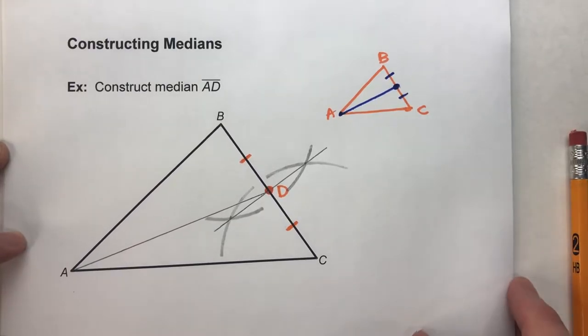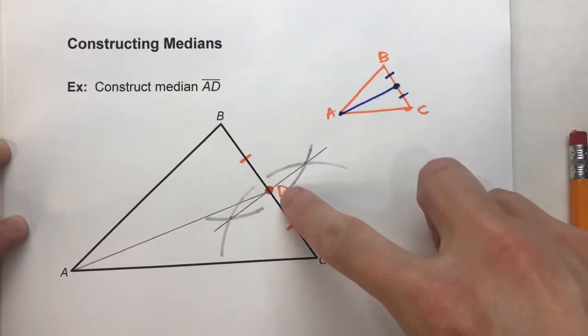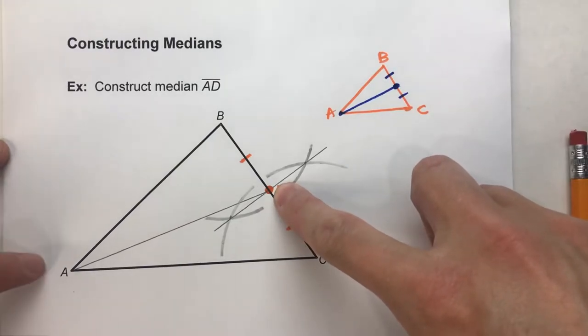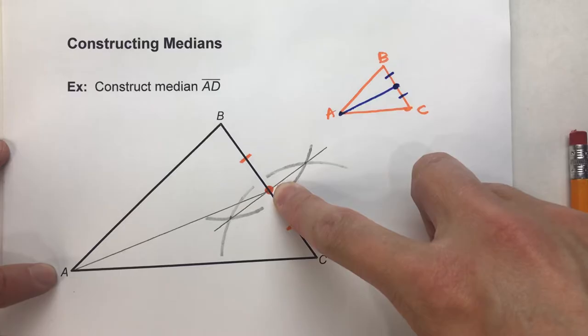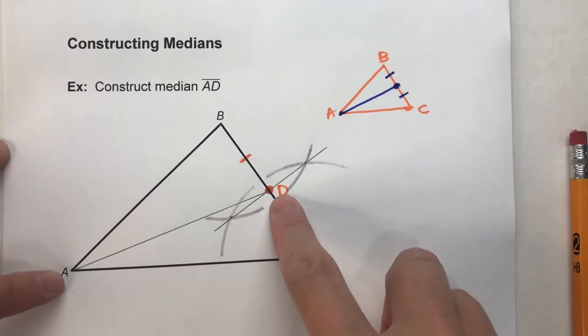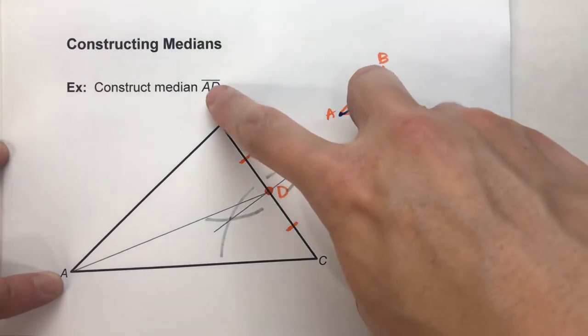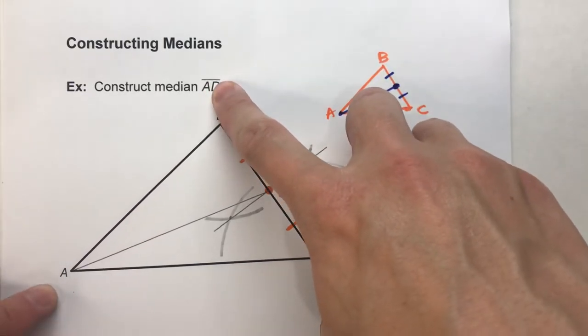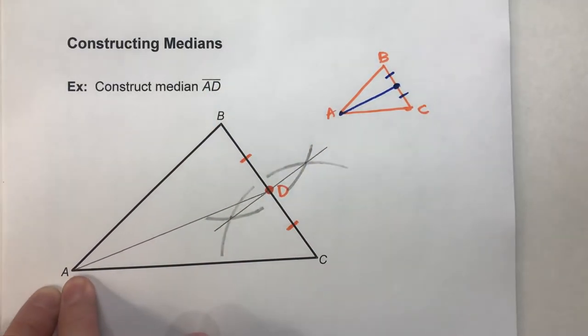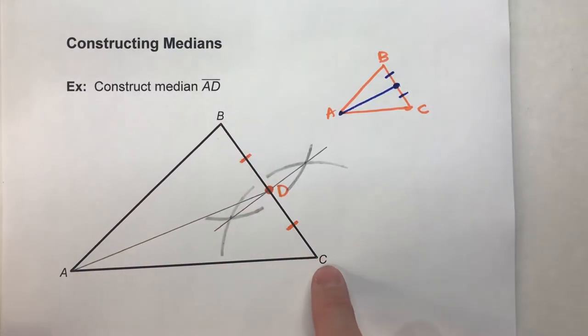So, the key to constructing medians: find the midpoint of the opposite side of the triangle that you're working with, and then connect them up. Just make sure you pay attention to which median it's asking for. Notice it's asking for A, D. So we knew the vertex we're working off of is A. We're not working off of B, we're not working off of C because they're not named in the median.